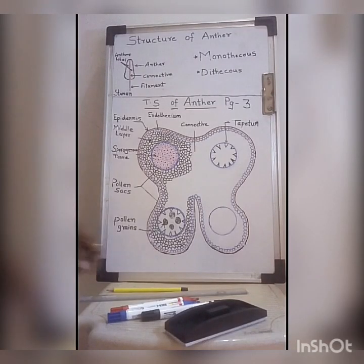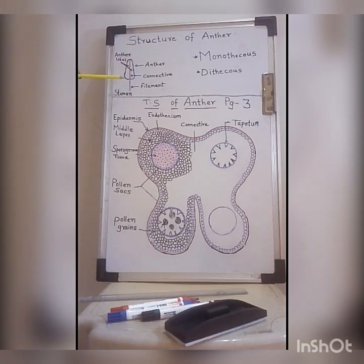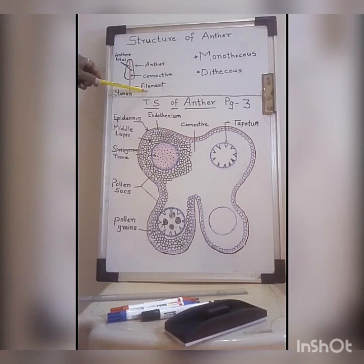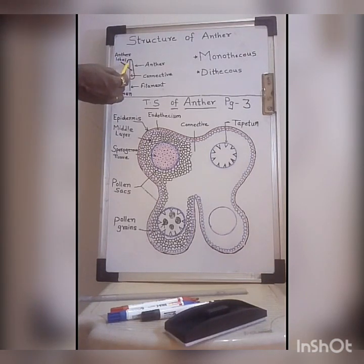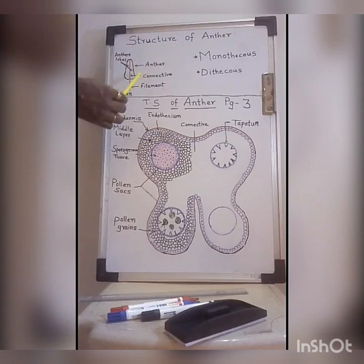Students, today we are going to study the structure of anther. In the previous lecture we studied that the androecium is the male reproductive part and each member of the androecium is called a stamen. This is the diagram of a single stamen which shows anther and filament — these are the two important parts of a stamen. The two compartments of the anther are called anther lobes.